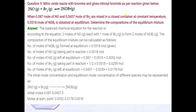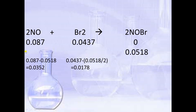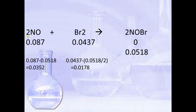Since 0.0518 mol of NOBr is given at equilibrium, at equilibrium the concentration of NOBr is 0.0518. For NO, we subtract: 0.087 minus 0.0518 equals 0.0352, because the number of moles of NO and NOBr are both 2, so we subtract directly. This is the concentration of NO at equilibrium.